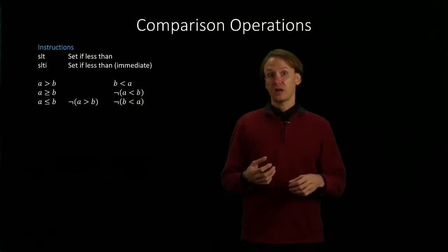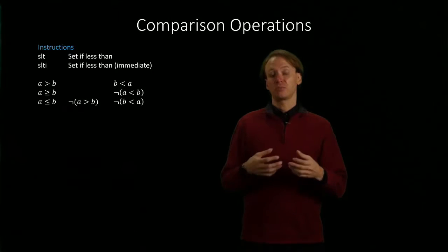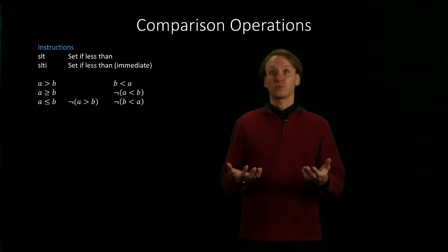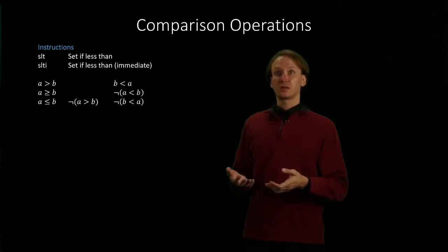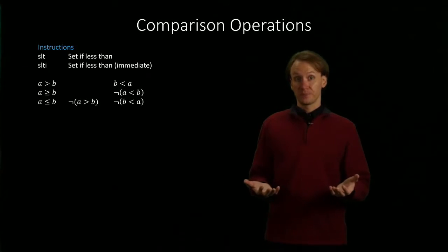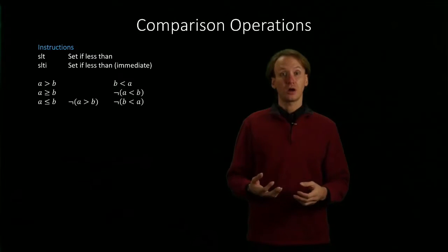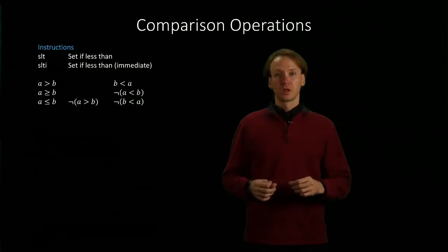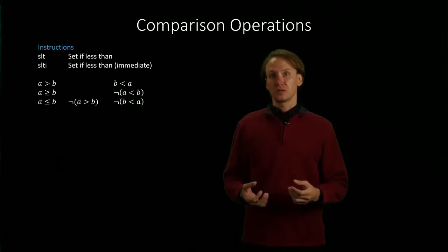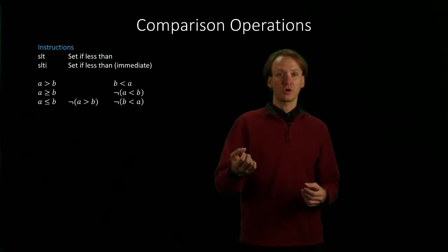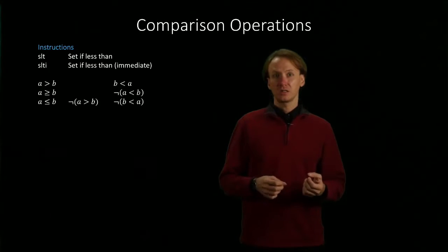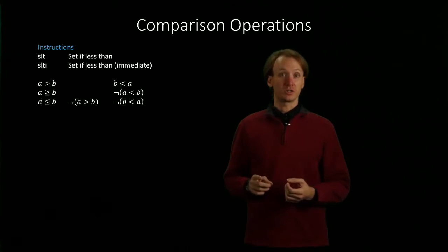So this time, we're going to look at how the assembler actually implements those. And the way those work is that we have a set less than and a set less than immediate instruction. We can use those in combination with the equality tests. The way these instructions work is that if my first parameter is less than my second parameter, then it's going to put the value of 1 into an output register.